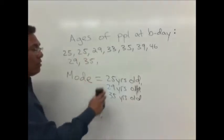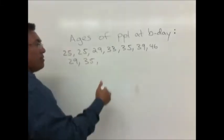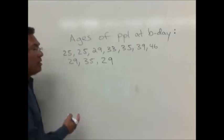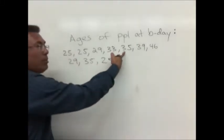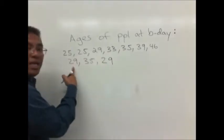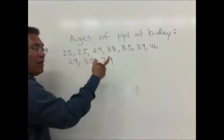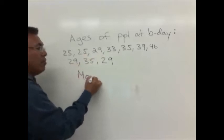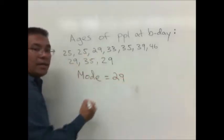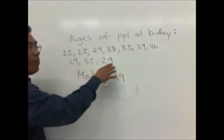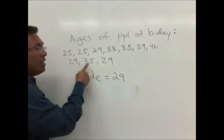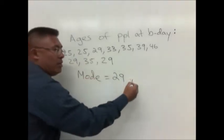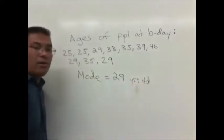Now let's say we took another survey and found out that somebody else at the party was 29. Now what would the mode be? We still have two people that are 25, two people that are 35, but now we found three people that are 29. Now it's obvious that 29 is the age that occurs most frequently. So the mode would be 29. It wouldn't be 25 or 35 anymore because those only occur twice.